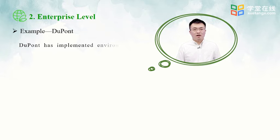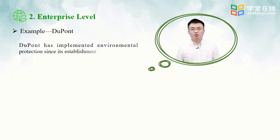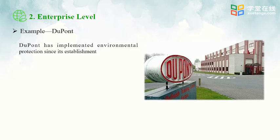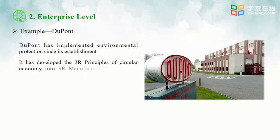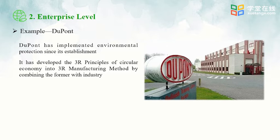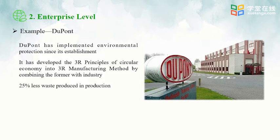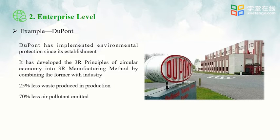One good practice of circular economy is made by DuPont. DuPont has implemented environmental protection since its establishment. It upgraded the 3R principles of circular economy by combining them with industry, creating the 3R manufacturing method. With this method, waste from production was reduced by 25% and air pollution emissions from factories were reduced by nearly 70%.